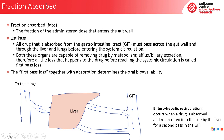When the drug is absorbed from the gastrointestinal tract, it faces one of two fates. It can be delivered to the liver where it is metabolized before some of it passes on to the systemic circulation. But sometimes it is re-excreted into the gastrointestinal tract via the bowel. When a drug is absorbed and re-excreted into the bowel by the liver for a second pass in the GIT, we have a phenomenon known as entero-hepatic recirculation, which can often be the cause of the long half-life experienced by some drugs.